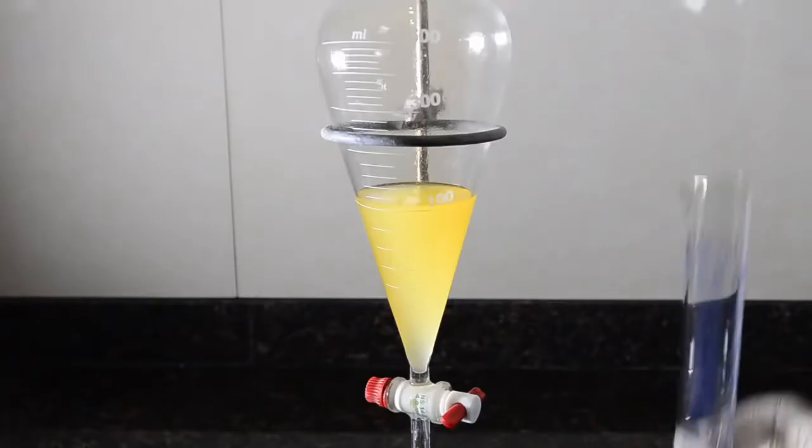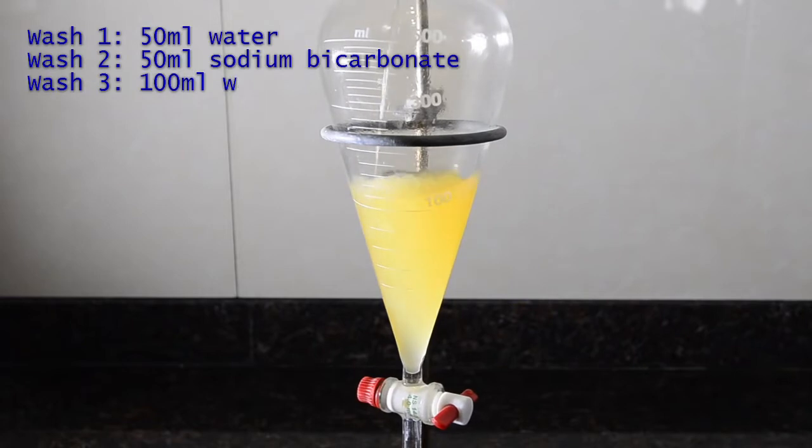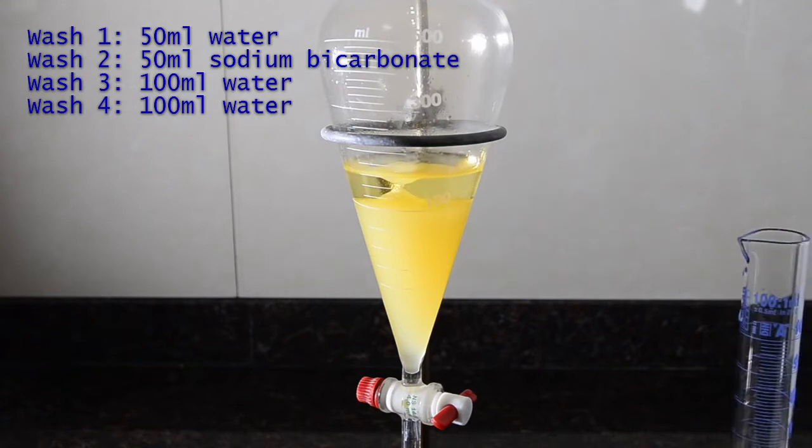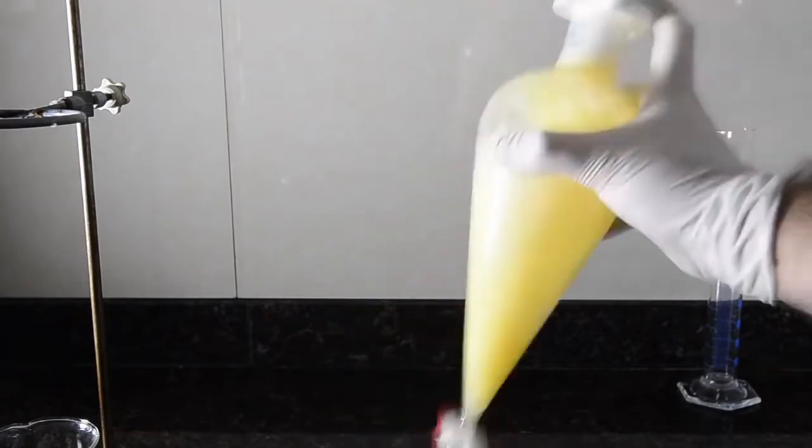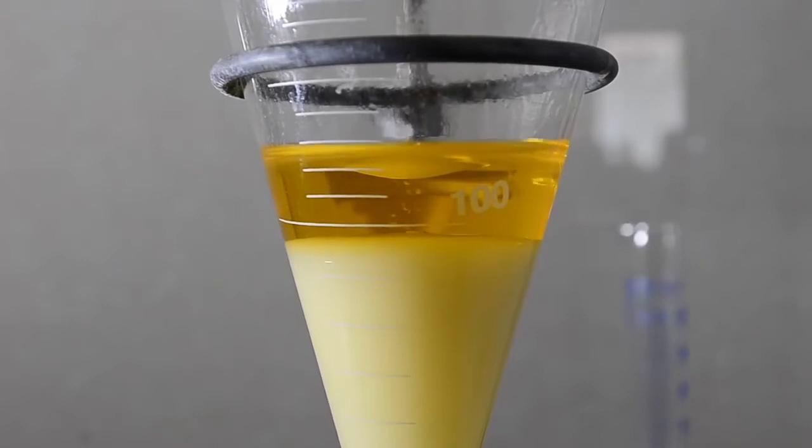First, wash the product with 50 ml of water by adding to the separating funnel. Stopper and shake vigorously, being careful to vent to prevent any pressure buildup, then allow the layers to separate fully. This time, water is less dense than the nitrotoluene, so our product is the cloudy bottom layer. Separate this from the water, and then return the product to the separating funnel.